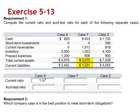Case Y: total current assets, 3,575, divided by current liabilities, 1,221. The current ratio is 2.93 — $2.93 in current assets for each dollar in current liabilities.